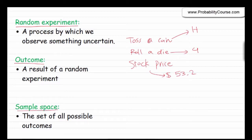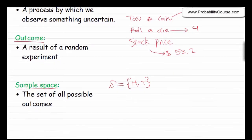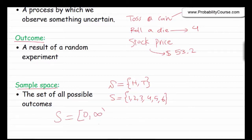A sample space is a set of all possible outcomes. In the case of tossing a coin, your sample space, which is usually shown by the set S, has two elements: heads and tails. In the case of rolling a die, your sample space is {1, 2, 3, 4, 5, 6}. And in the case of a stock price, your sample space is, in theory, any positive real number.